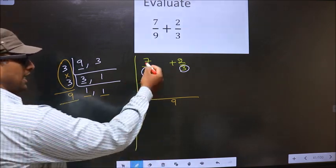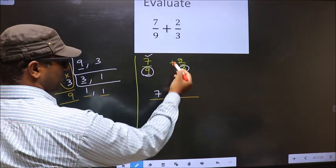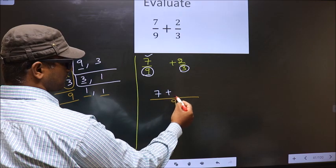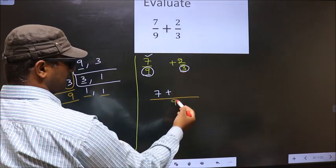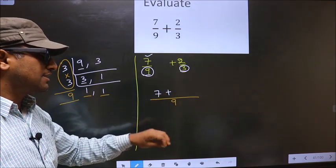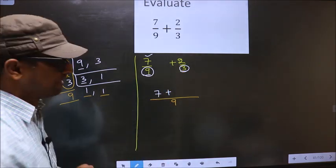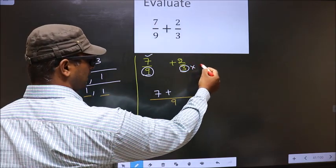So you will write the numerator as it is, that is 7. Now plus symbol as it is. Now here it is 3 and here it is 9. 3 should change to 9. For that to happen we should multiply this by 3.